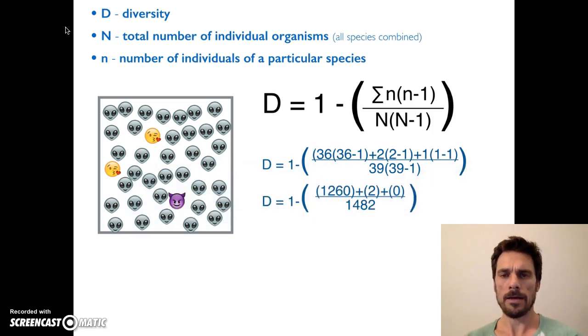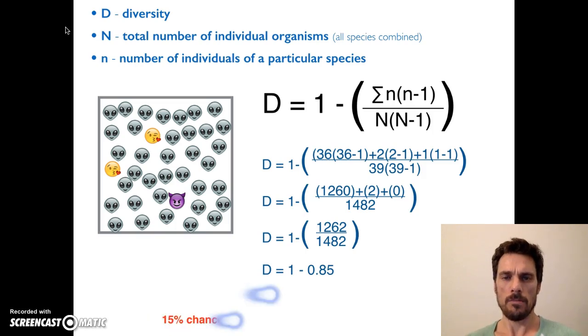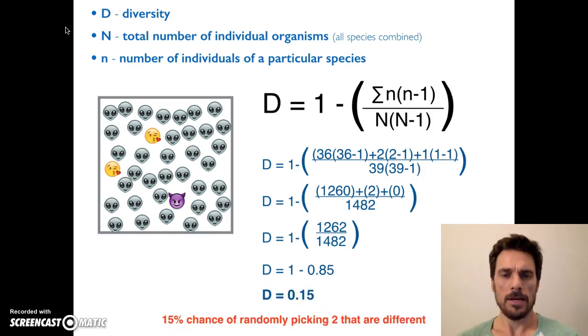Let's go through the math now. By the way, the 39 was 39 total faces in there, so 39 times 39 minus 1. We do the calculation and don't forget to do the 1 minus at the beginning of the equation. And I end up with D equals 0.15.